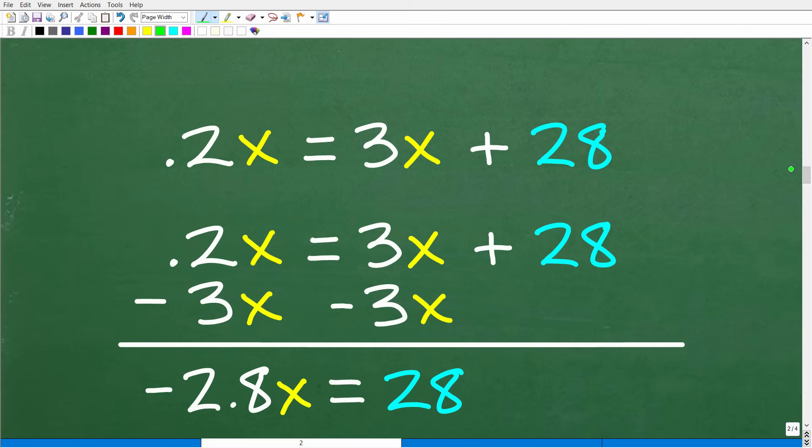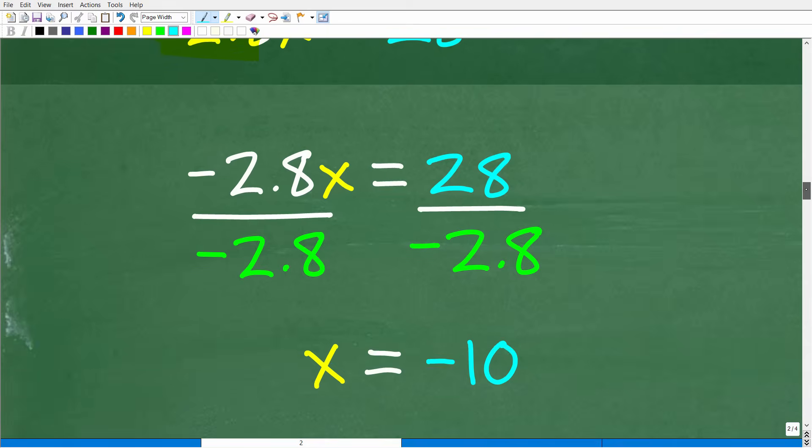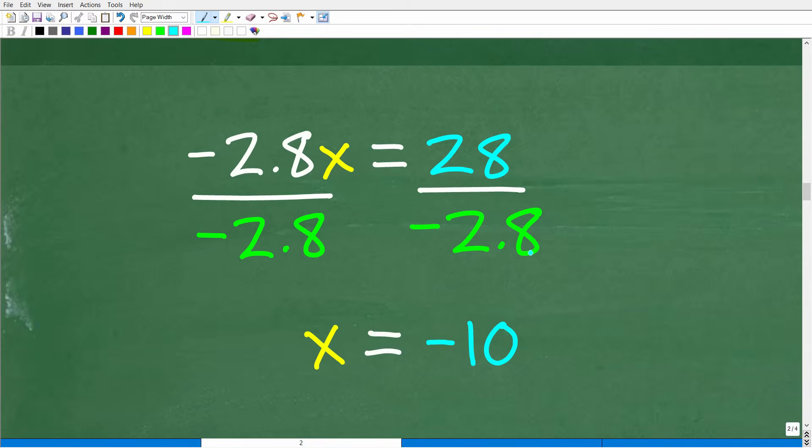So now we're going to solve for X. We have 0.2X is equal to 3X plus 28. And here are all the steps. We're going to subtract 3X from both sides of the equation. We're going to move all our variables to the left. And when we do this, we're going to be very careful. 0.2 minus 3 is negative - be careful here because we're dealing with positive and negative numbers. Negative 2.8X is equal to 28. So to solve for X, all we have to do is divide both sides of the equation by negative 2.8. And when we do that, we get 28 divided by negative 2.8. X is going to be equal to negative 10.